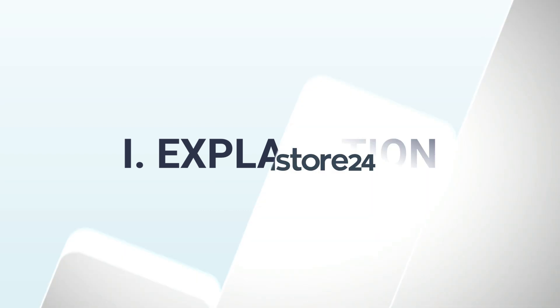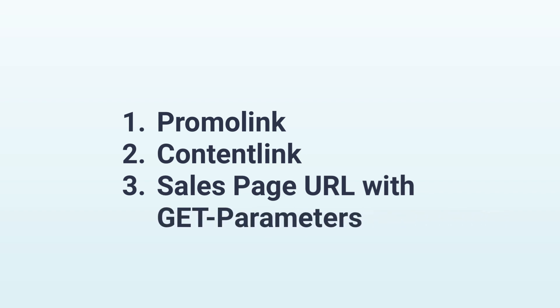As I already explained in the affiliate video, now linked in the top right hand corner, there are three different ways an affiliate can promote a product: with the promo link, the content link, or the sales page URL with get parameters. Although this may sound quite cryptic, it's actually quite simple. So let's take a look at it step by step.